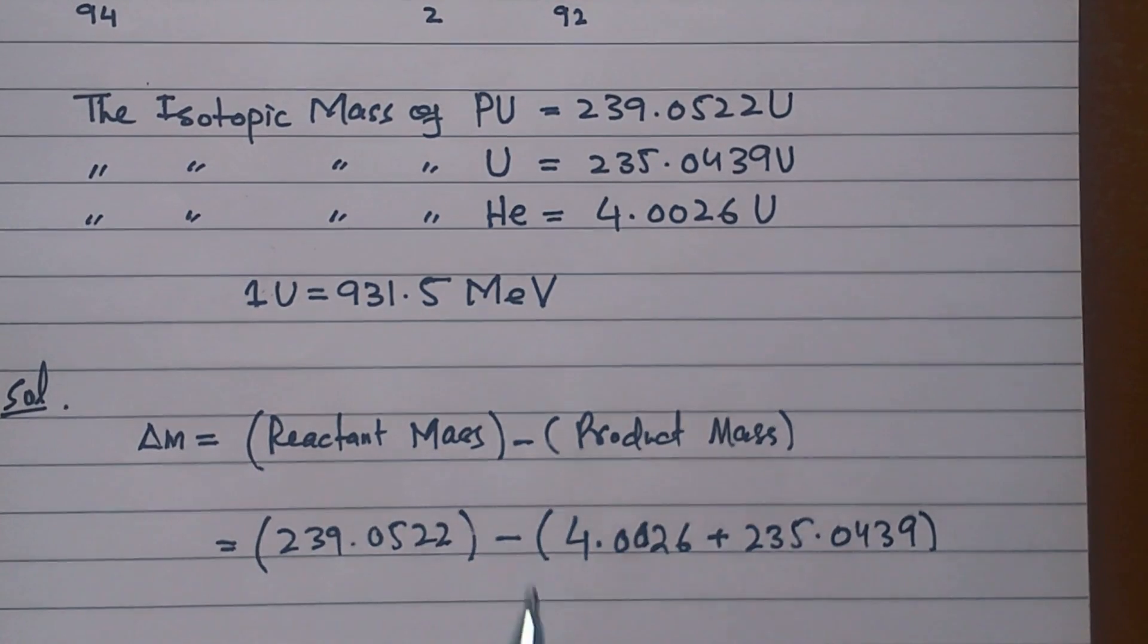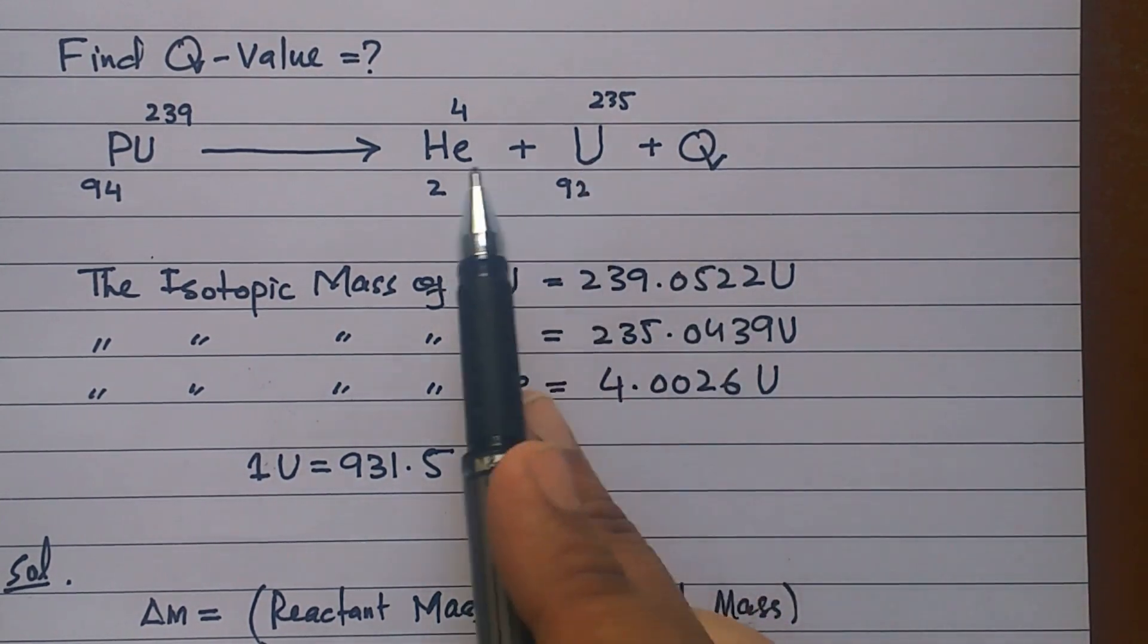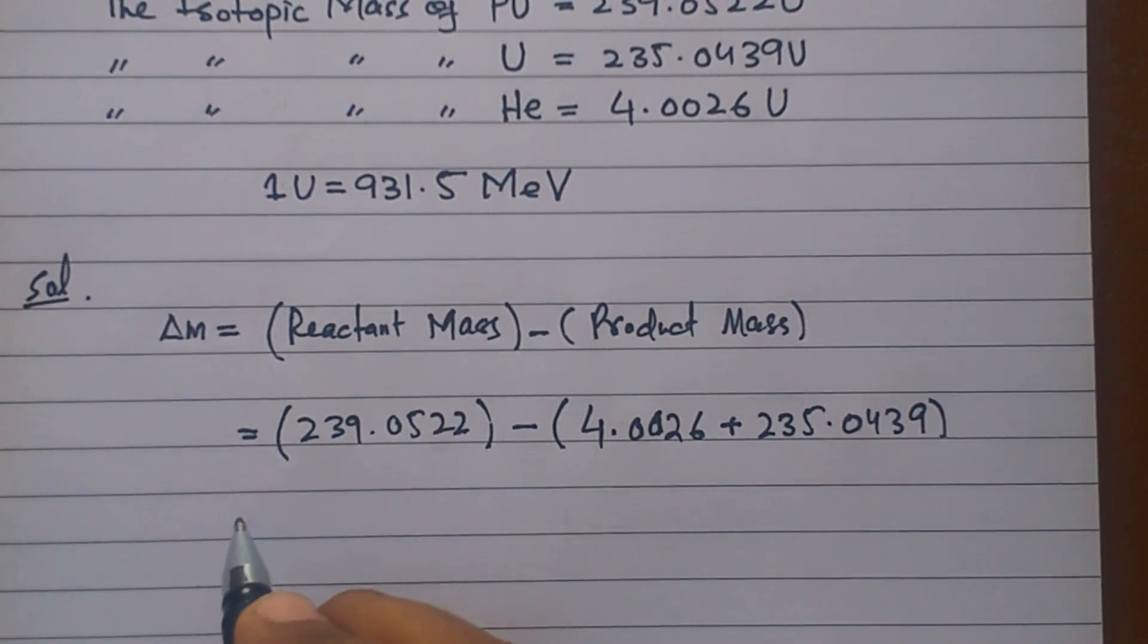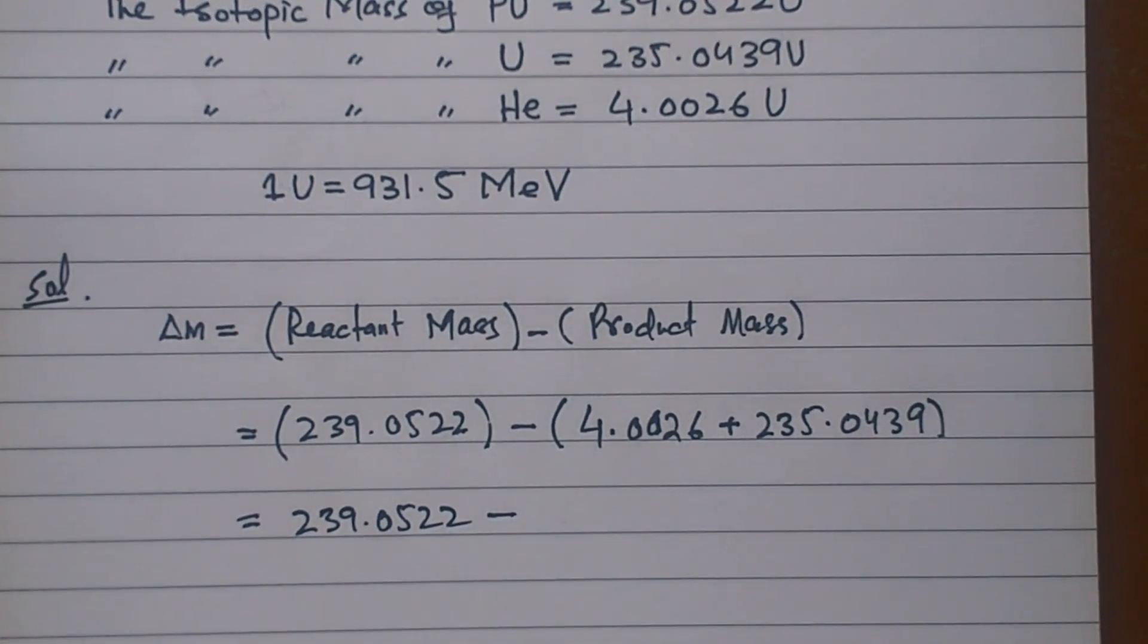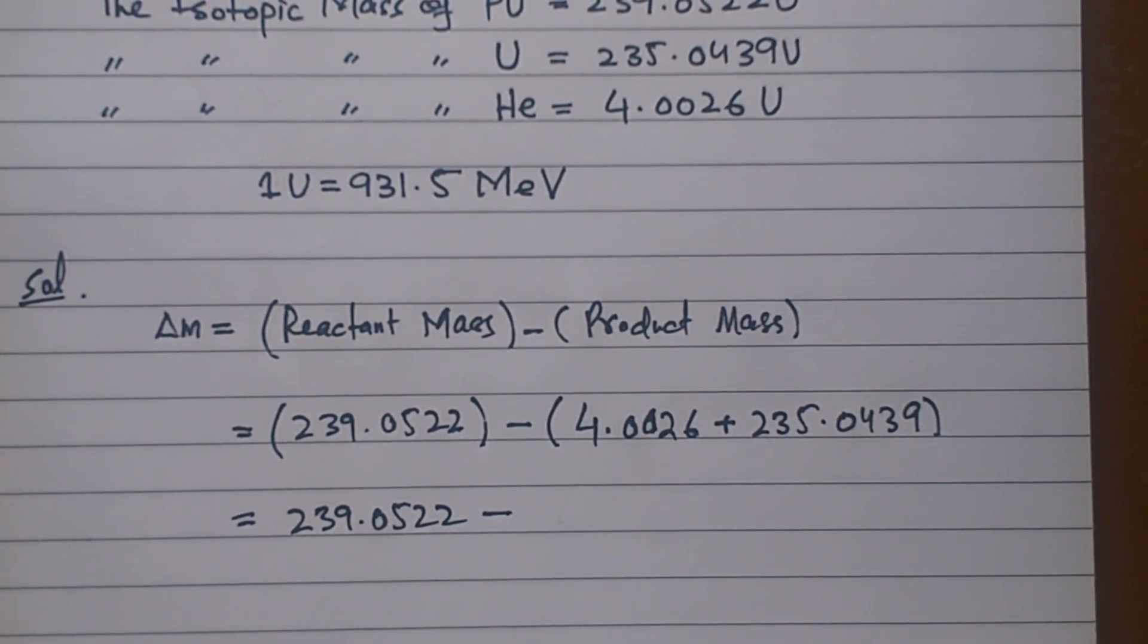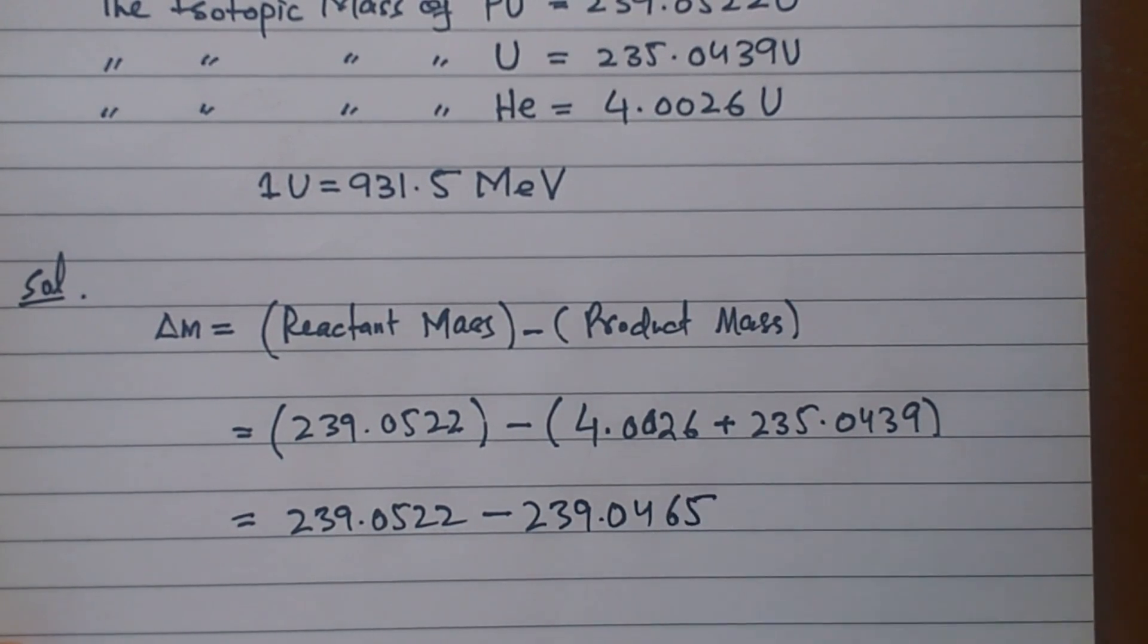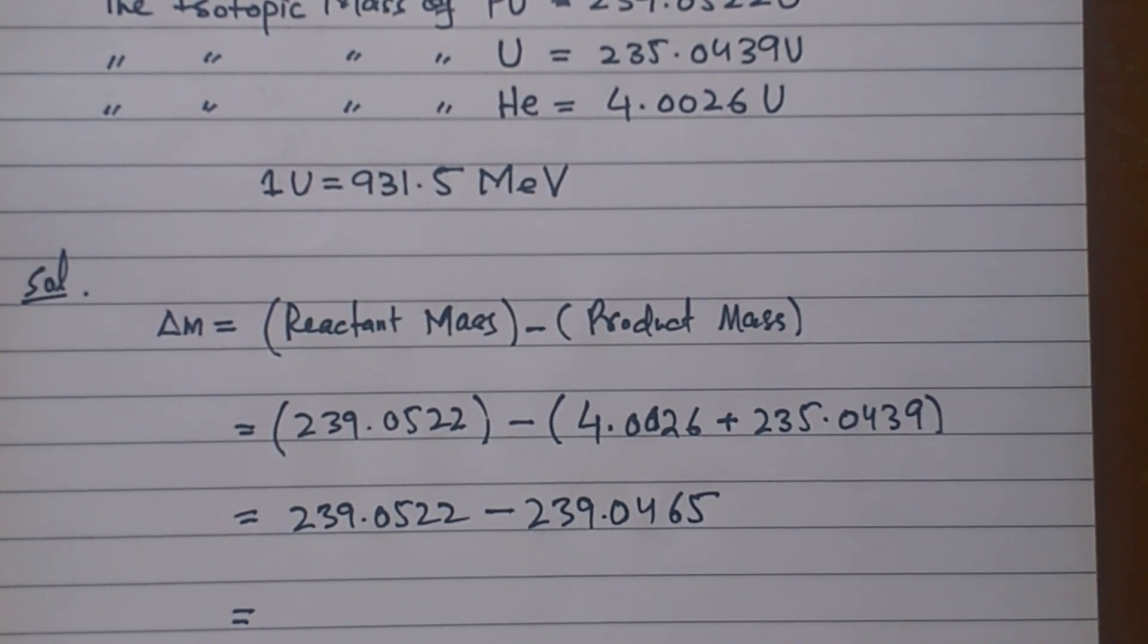You have to write reactant mass minus product mass. Now we have to solve it. We have 239.0522 minus, and if I have to plus them, then 4.0026 plus 235.0439, this becomes 239.0465.